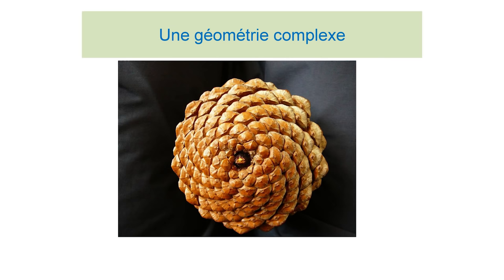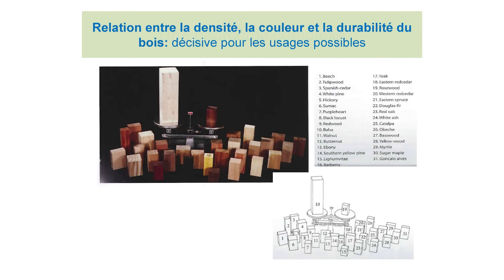Là, ensuite, il y a la notion de géométrie et du nombre d'or — on peut y revenir si vous êtes intéressés. Il y a une relation intéressante : ce sont les essences pionnières, les essences de demi-lumière, de demi-ombre et d'ombre. Donc les essences pionnières et les essences de la forêt du climax. C'est cette notion de bois clair à croissance rapide.